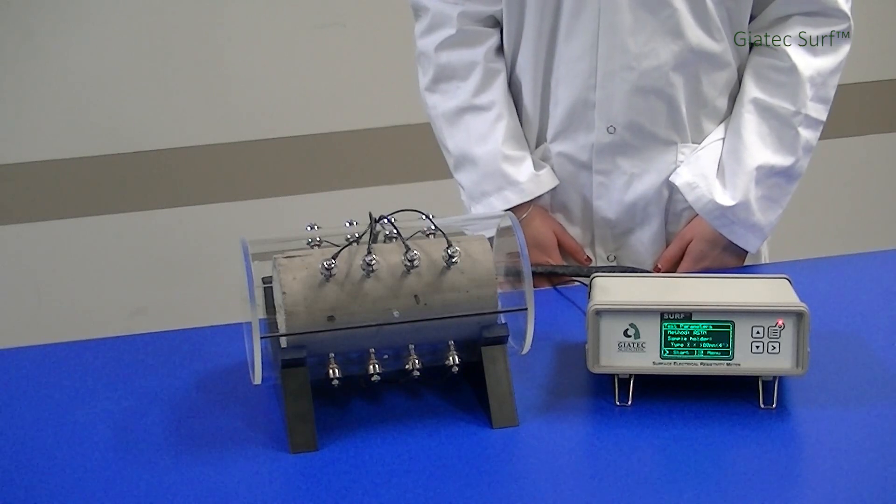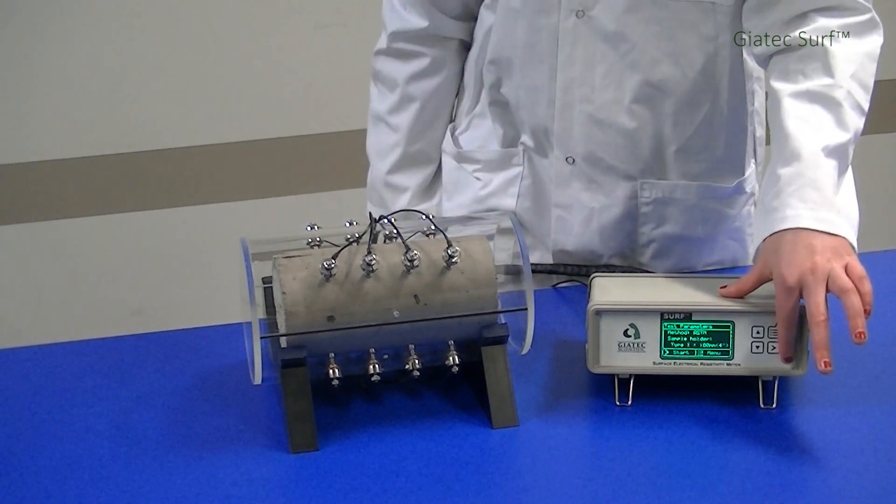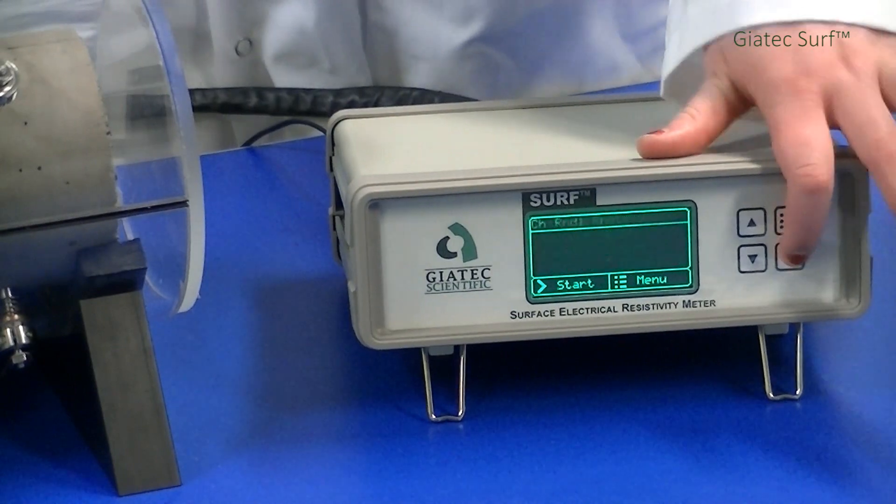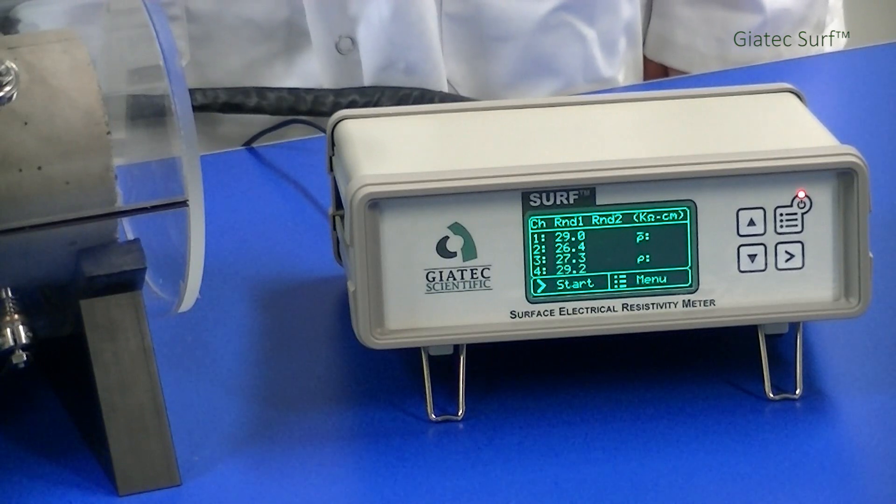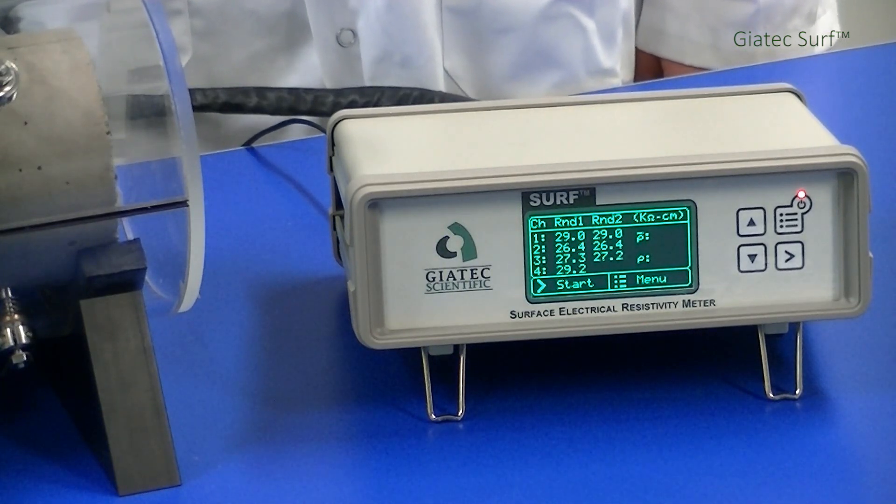Now, you are ready to start the measurements. Simply press the start key from the menu to run the test. The device starts collecting data from the four sets of electrodes in two rounds, and the average electrical resistivity for eight measurements are printed out on the LCD.